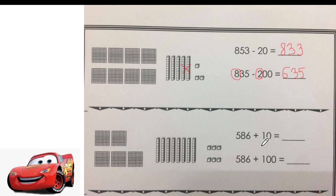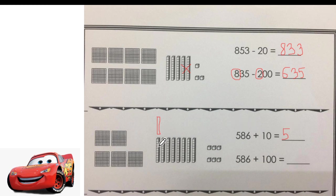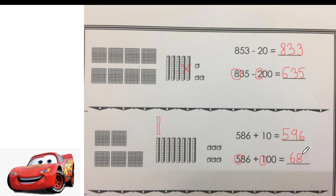Next one: we're going to add 586, add ten more. Ten more means one more ten bar. What happens to hundreds? Nothing. What happens to ones? Nothing — stay the same. So five and six will stay the same. But the tens digit in the middle will not be eight — it will be nine. The ones will stay the same. Let's use mental math quickly for the hundreds: five plus one equals six. And the tens and ones stay the same.